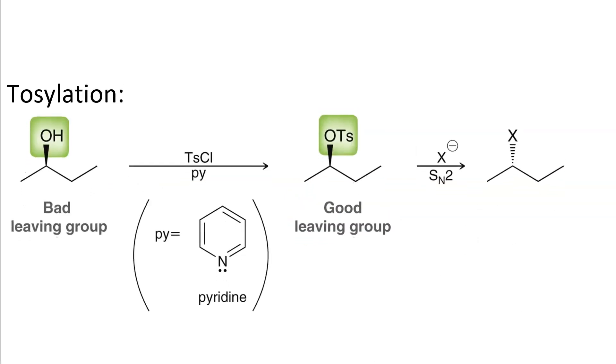Of course, we can also use tosyl chloride or mesyl chloride to change the hydroxide, which is a bad leaving group, into a sulfonate like tosylate, which is a good leaving group. We've seen the mechanism for this already. But once you've tosylated, then you can do substitution or elimination. So if we used sodium ethoxide from here, we would get Zaitsev elimination. And if we use tert-butoxide, we get Hofmann elimination.